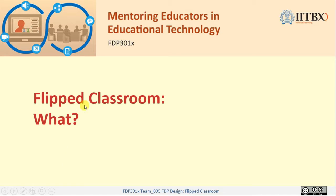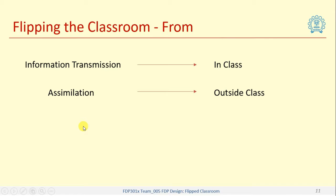Let us see what is this flipping the classroom. Flipping the classroom is simply about going from information transmission in the class and assimilation outside the class, which is the traditional model, to saying let us move this information transmission to outside the class and let us move this assimilation to inside the class.